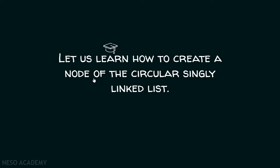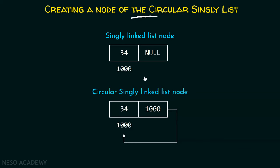Let us learn how to create a node of the Circular Singly Linked List. Here you can see a Singly Linked List node and a Circular Singly Linked List node. In a Singly Linked List node we have null, while in a Circular Singly Linked List we have the address of the node itself — that is address 1000 — stored in the next part as well.